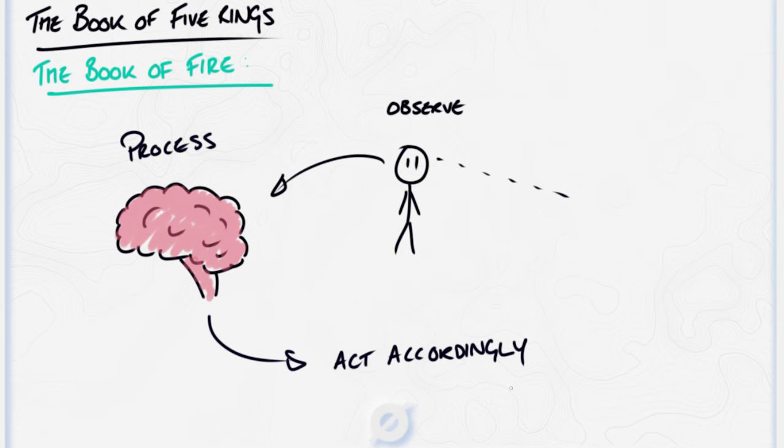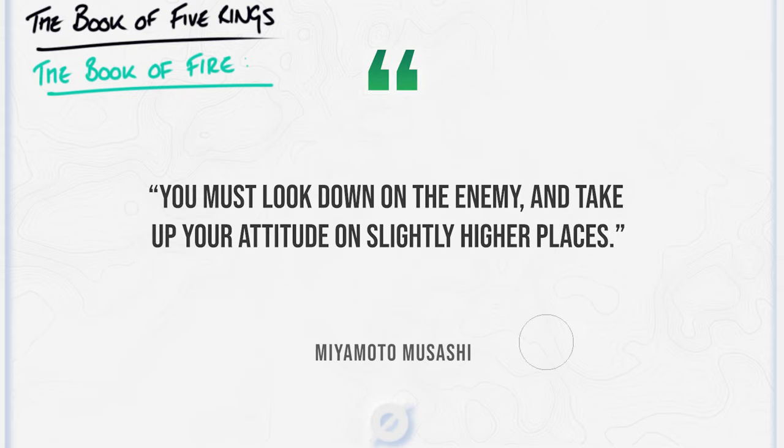Musashi emphasizes the importance of positioning during battle, circling to the non-dominant side of your enemy, forcing your opponent into unfavorable ground, and trying to create uncertainty in them. He also explained that one's vision must be clear of obstruction, and unblinded by sunlight and moonlight. As well as the importance of things like high ground, you must look down on the enemy, and take up your attitude on slightly higher places.